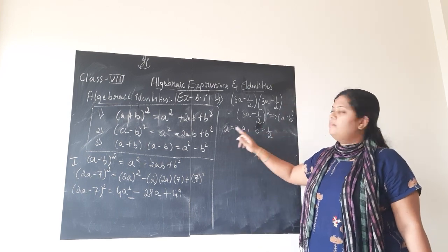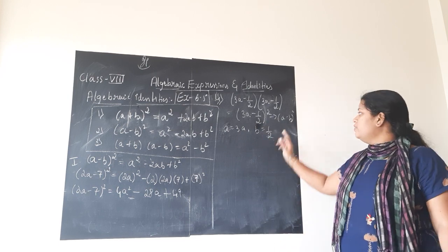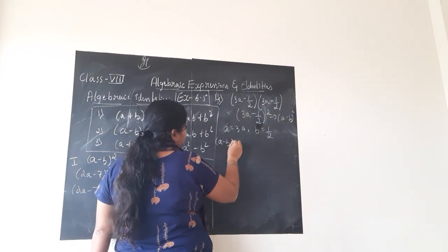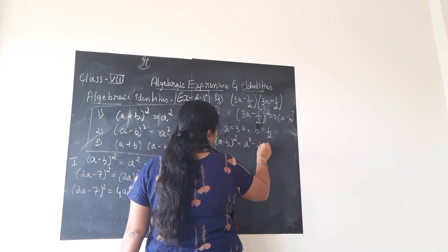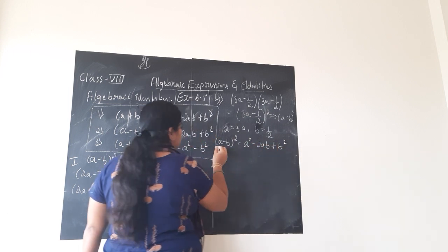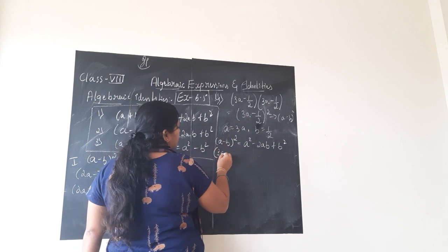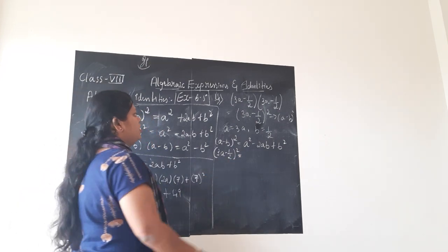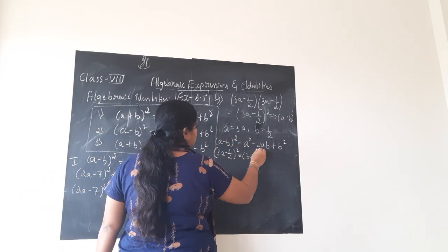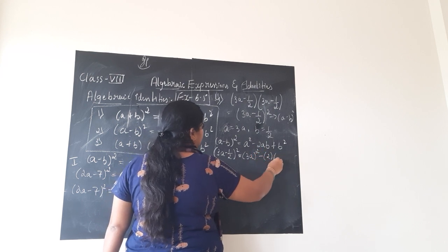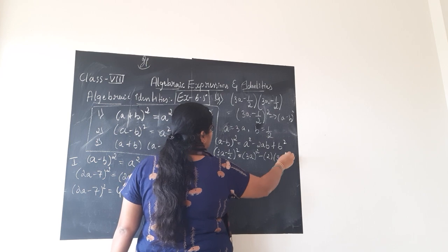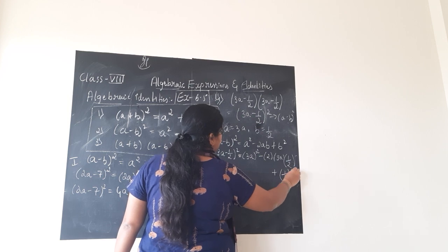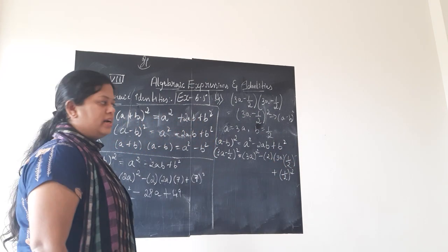Where a is 3a and b is 1 by 2. The identity: a minus b whole square equals a squared minus 2ab plus b squared. In place of a minus b whole square, I have 3a minus 1 by 2 whole square, which equals a squared — that is 3a whole squared — minus 2 into a (which is 3a) into b (which is 1 by 2), plus b squared — that is 1 by 2 whole square.